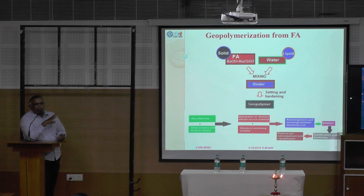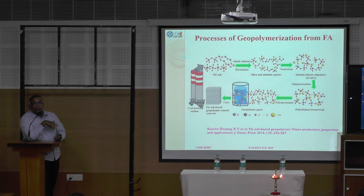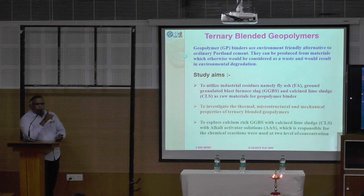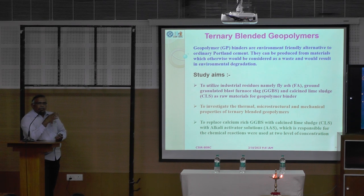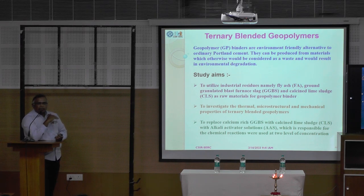This is the formation of your fly ash-based geopolymer. I have taken fly ash only with NaOH and Na2SiO3. This is sodium silicate adding together with water and forming a binder — that forms a geopolymer. This is the geopolymer structure, given nicely by this paper. Why use fly ash alone? OPC has CSH; geopolymer already has NASH. Why don't we use GGBS? That has been attempted. In addition to GGBS, I have also attempted with lime sludge (CLS).